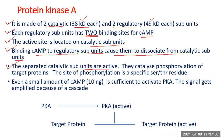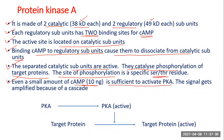When the catalytic subunits are associated with regulatory subunits, the whole enzyme is inactive. But when catalytic subunits are separated from the regulatory subunits, they become active and catalyze the phosphorylation of target proteins. The site of phosphorylation is specific serine or threonine residues. Even a very small amount of cyclic AMP — as little as 10 nanograms — is sufficient to activate Protein Kinase A.